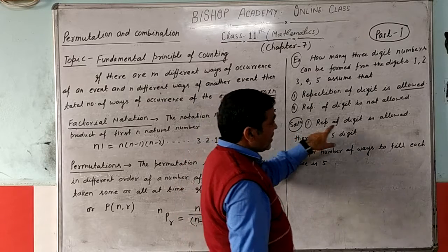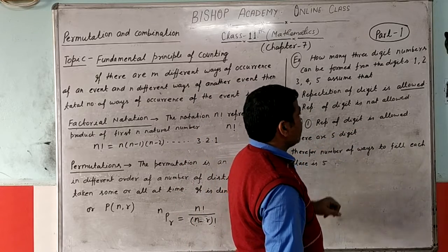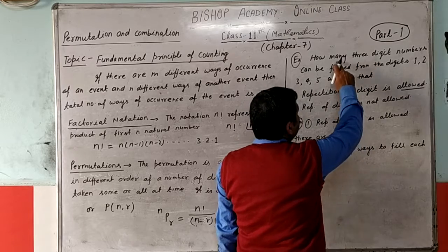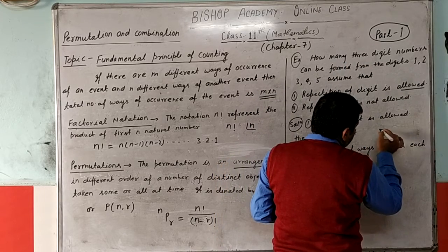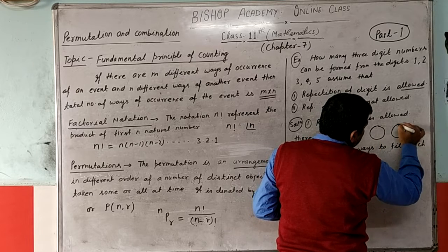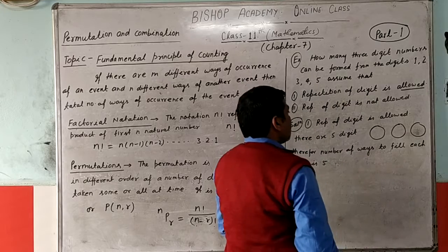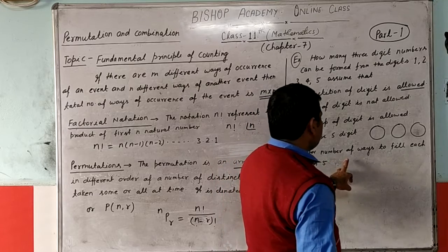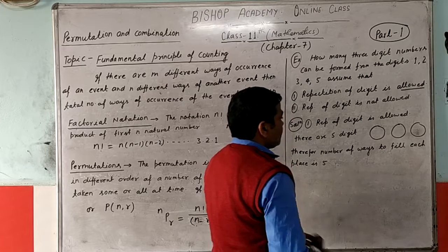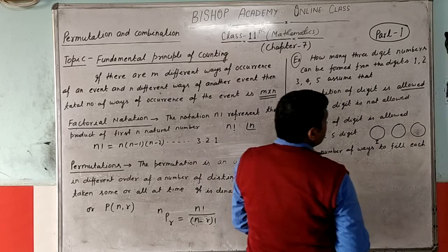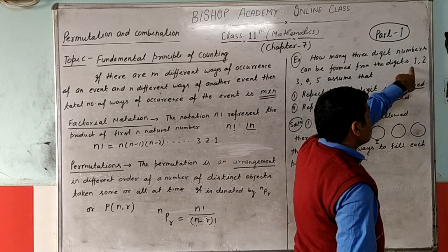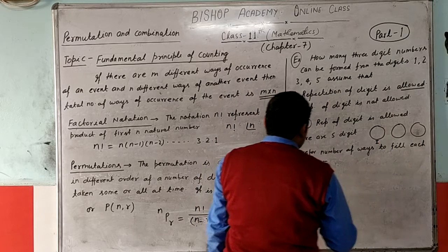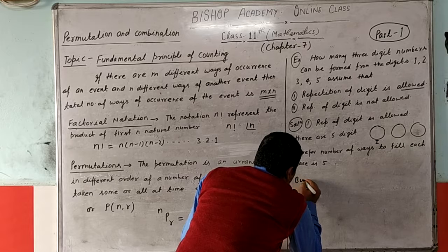Solving the first case — repetition of digits is allowed. There are 5 digits: 1, 2, 3, 4, and 5. We need to form 3-digit numbers, so there are three places: first, second, and third. Since repetition is allowed, each place can be filled by any of the 5 digits, so the number of ways for each place is 5.